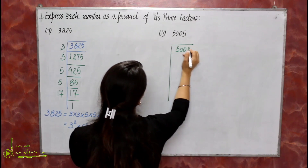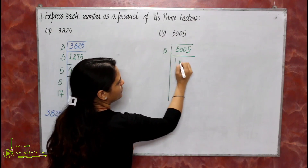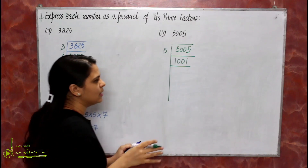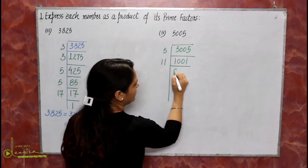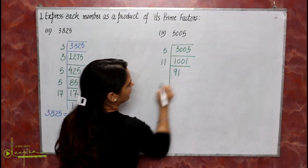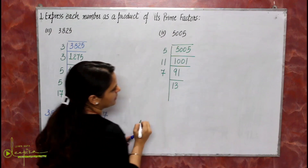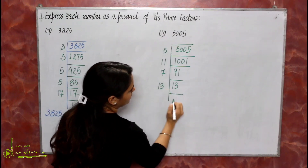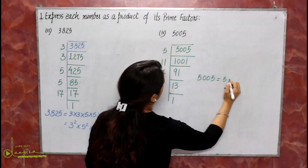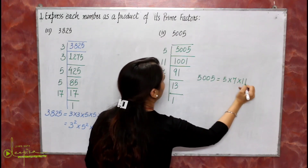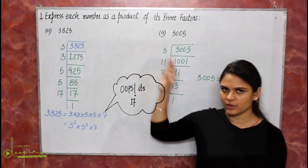Next, 5005. This is divisible by 5 giving 1001. Now 1001 is divisible by 7, giving 143. Then 143 is divisible by 11 giving 13, and 13 is a prime number. So 5005 = 5 × 7 × 11 × 13. In a similar way you can solve the rest of the parts.